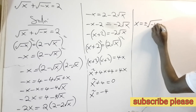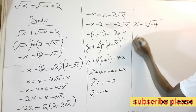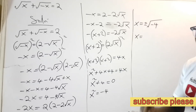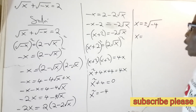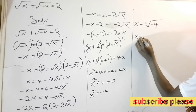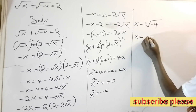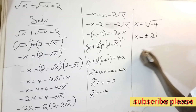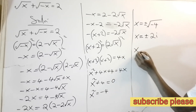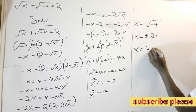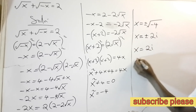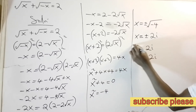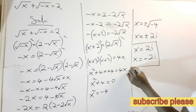We know that the square root of 4 is 2, so the square root of negative 4 is 2i. Therefore x equals plus or minus 2i — that is, x equals 2i or x equals negative 2i, both imaginary values.